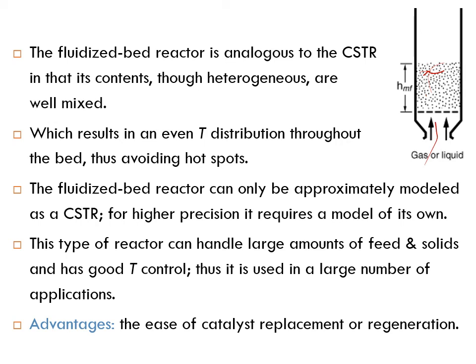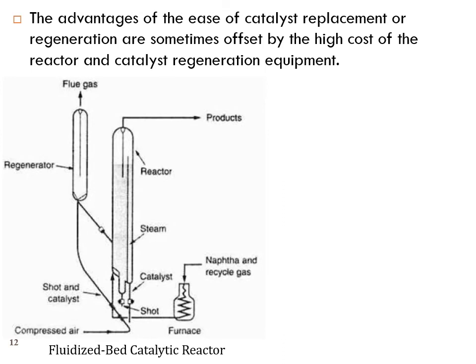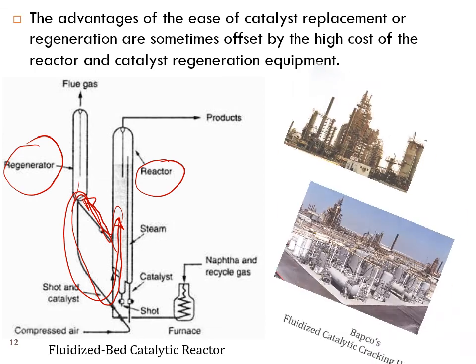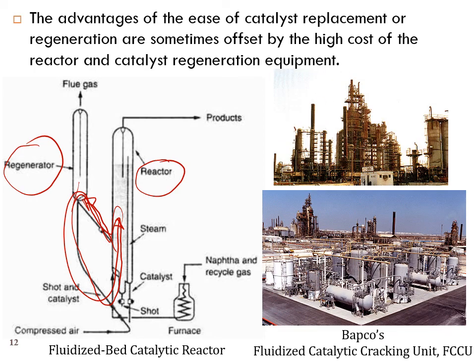An advantage of the fluidized bed reactor is the ease of catalyst replacement or regeneration. You can increase the flow, transport a portion of catalyst to a regenerator, burn off the coke by introducing hot air, and then return the refreshed catalyst to the reactor — the cycle continues. A good example is the FCC unit — the Fluidized Catalytic Cracking unit.